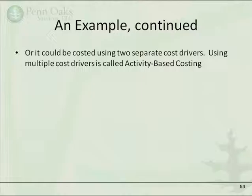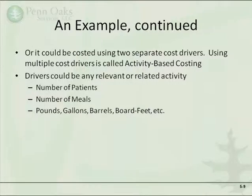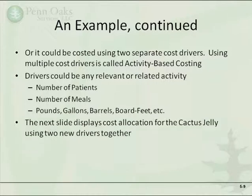You could even cost it using separate cost drivers. When we get involved with multiple cost drivers, we are talking about activity-based costing. The driver is typically some measure of activity — any relevant or related activity: number of patients in a hospital, number of meals for a restaurant, pounds, gallons, barrels — some physical measure can work. Think of a cost driver as any measure of activity. The next slide will show cost allocation for our Cactus Jelly example using two new drivers together.